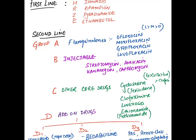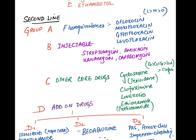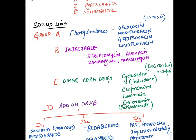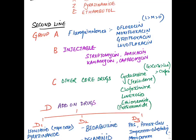Group B are injectable drugs, mainly aminoglycosides. The mnemonic is SACK: streptomycin (placed in second-line but not given for MDR-TB — it is a supplemental drug), amikacin (effective in streptomycin-resistant cases), kanamycin, and capreomycin. Group C are bacteriostatic agents — mnemonic CYCLE: cycloserine, clofazamine, linezolid, and ethionamide. The prodrug of ethionamide is prothionamide, and combining two cycloserine molecules gives terizidone. The most preferred drug among Group C is ethionamide.